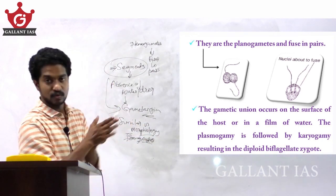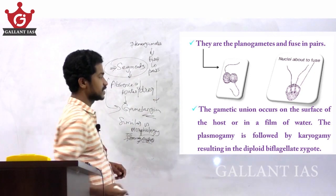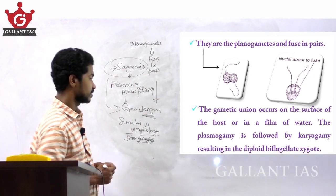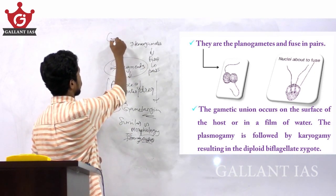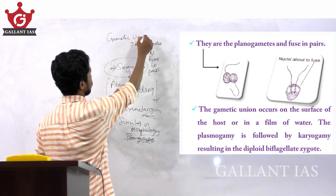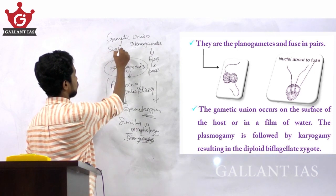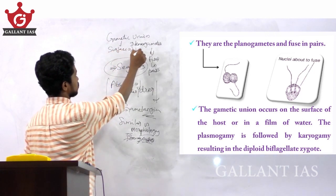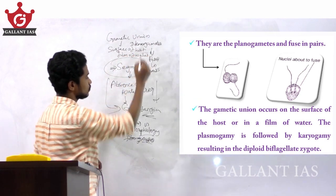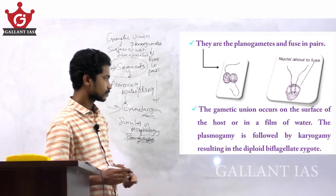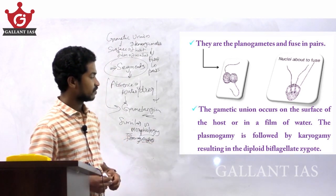The gametic union occurs — the fusion of the gametes takes place and the gametic union occurs on the surface of the host or on the film of water.